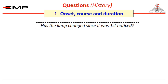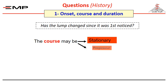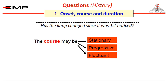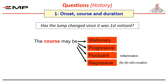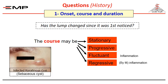Now you want to know the course of the swelling. A good question is: has the lump changed since it was first noticed? The course can be stationary, progressive, fluctuant as in some inflammatory lesions, or regressive as in inflammation responding to treatment. The picture shows an infected keratinocyst, usually referred to as sebaceous cyst, and the patient will describe it as having an insidious onset with stationary or slowly progressive course.